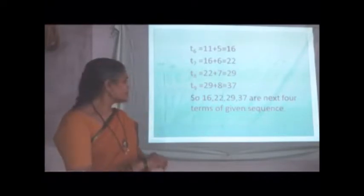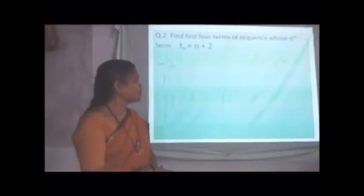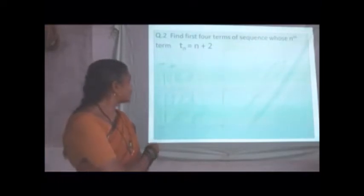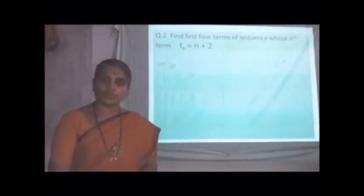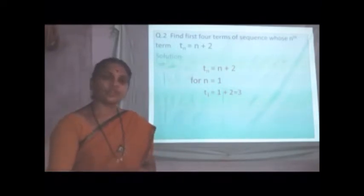Now, second example in this topic. Find first four terms of sequence whose nth term Tn is given. Here, I am taking example. Tn is equal to n plus 2. We have to find here T1, T2, T3 and T4. So, substitute n is equal to 1, n is equal to 2, n is equal to 3 and n is equal to 4 in given equation.